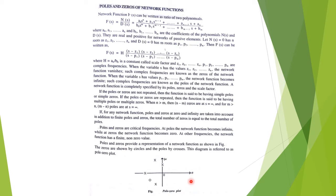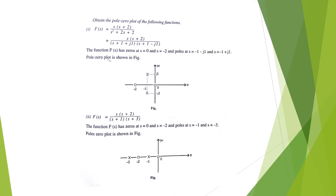Poles and zeros can be indicated on the pole-zero plot where poles are generally indicated by a cross and zeros are indicated by circles. For example, the function F(s) = s(s+2) / (s² + s + 2), where the denominator is factorized. There is a zero at s = 0, so a circle is placed at the origin. Another zero is at s = −2, so a circle is placed there. A pole exists at s = −1 − j, so a cross is placed there.